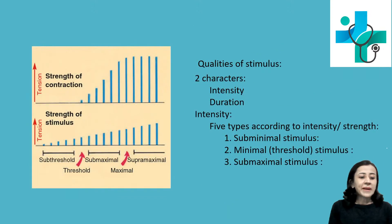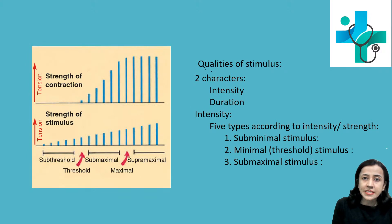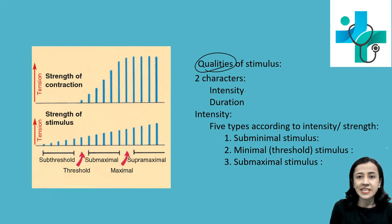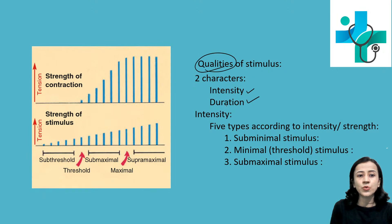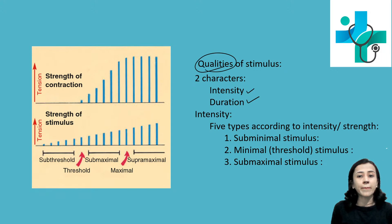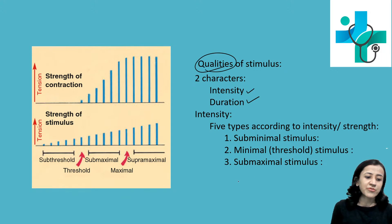Depending on its qualities, stimulus has two characteristics: intensity and duration. According to intensity, stimulus is divided into five groups: subminimal stimulus, minimal or threshold stimulus, submaximal stimulus, maximal stimulus, and supramaximal stimulus.